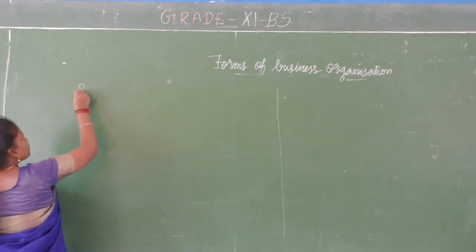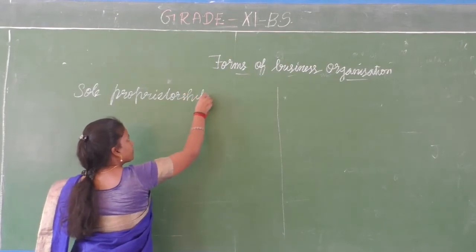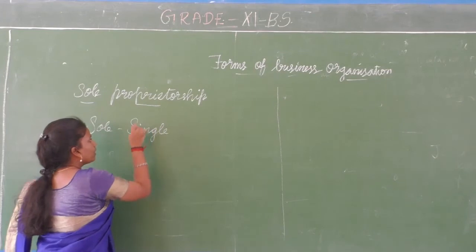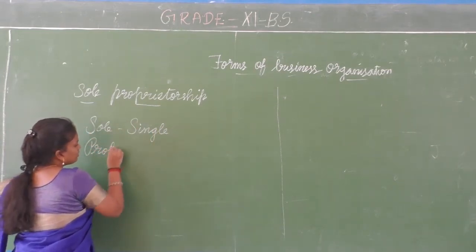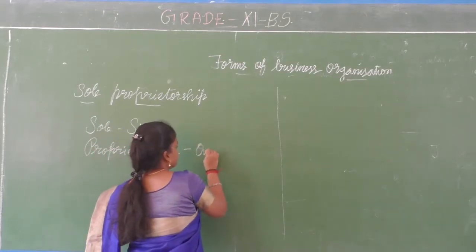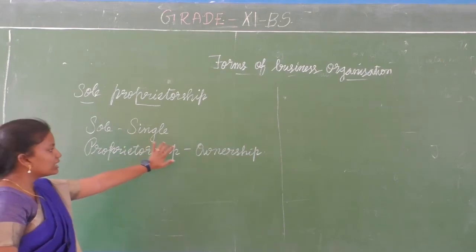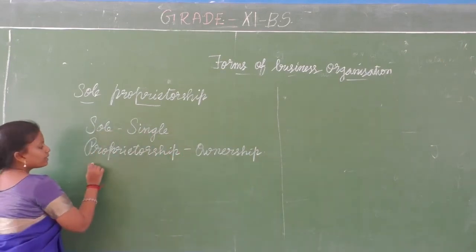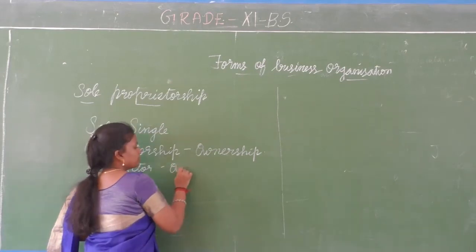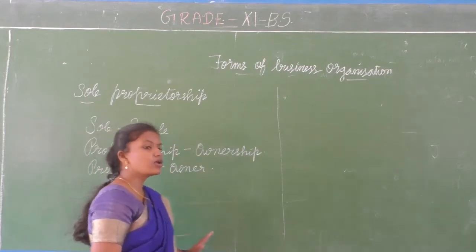The proprietor means owner - the person who runs the business. So the person who runs the sole proprietorship is called a sole proprietor, meaning single owner of the business. Examples include a vegetable seller or green grocer who goes to the market, buys vegetables, brings them to the shop or your home, and sells directly. He or she does not involve anybody else. The profit is earned by that one person. In sole proprietorship, only one person is involved in all activities - managerial decisions, planning, purchasing, selling, marketing - everything.